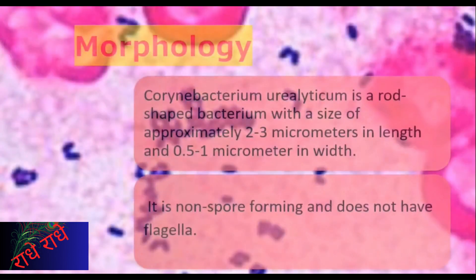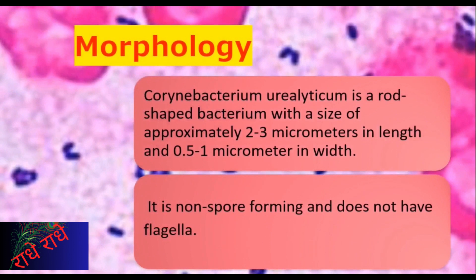Coronybacterium ureoliticum is a rod-shaped bacterium with a size of around 2 to 3 micrometers in length and 0.5 to 1 micrometer in width. Upon observation under a microscope, it can be identified as gram-positive, non-modal, catalase-positive and oxidase-negative. It is non-spore-forming and does not have flagella.